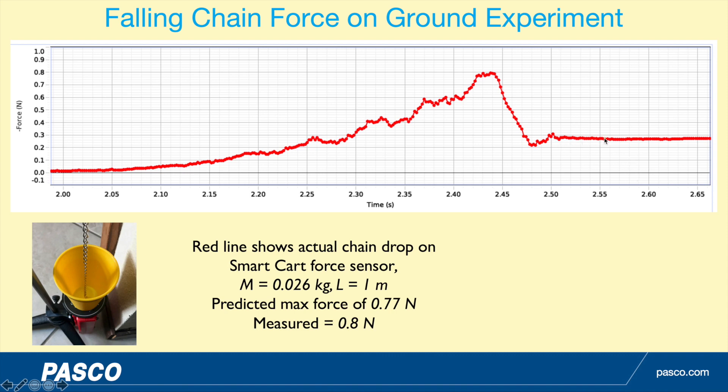The chain is kind of rattling around a little bit as one part hits a part that's already there. Then it levels off at almost 0.3, and the mass of this chain is 0.026 kg, so times 10 N/kg it'd be about 0.26 would be the final result, and it looks pretty close.